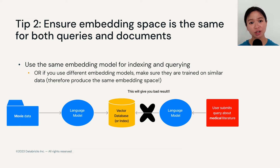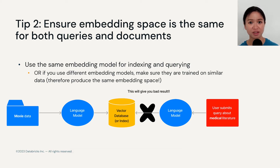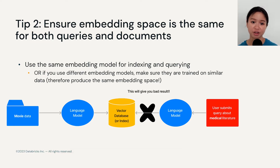Tip two: make sure that your embedding space actually captures all of your data, including your user queries. For example, if your data is about movies and you ask something about medicine, then the search retrieval system will definitely have bad performance. So always make sure the documents in your vector database contain relevant information to your queries. Similarly, use similar models to index your documents and your queries if you want them to share the same embedding space, which is really important for returning relevant results.